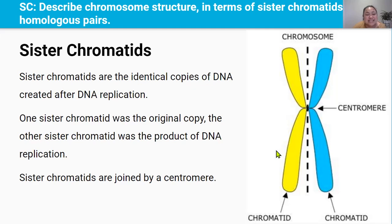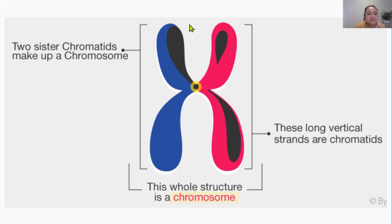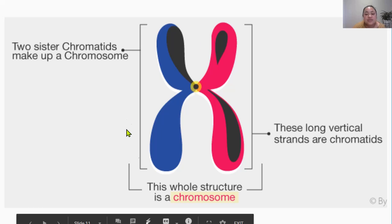When DNA is in the chromosome form, the sister chromatids are much easier to see. Sister chromatids are identical copies of DNA created after DNA replication. One of the sister chromatids was the original copy, and the other sister chromatid was the product of DNA replication. These two sister chromatids are joined by a centromere. A chromatid is one of these long strands — the two long strands are 100% identical to each other, joined at the center by a centromere, and we call this whole thing a chromosome.